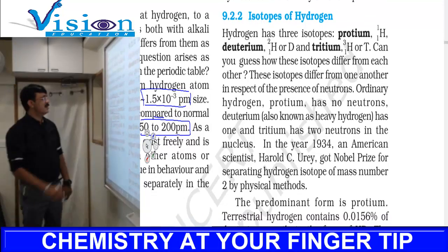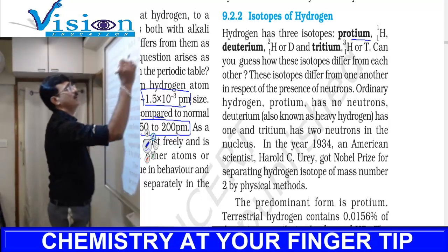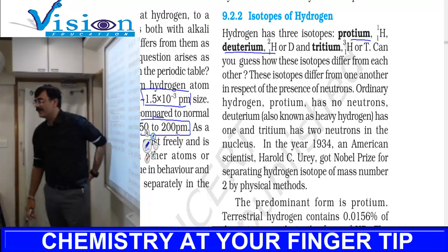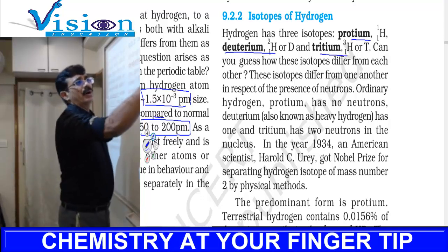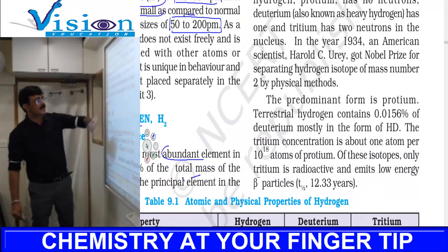Hydrogen has three isotopes. One is protium, that is H-1. Second is deuterium, that is H-2 or capital D. This is called heavy hydrogen. And third is tritium.